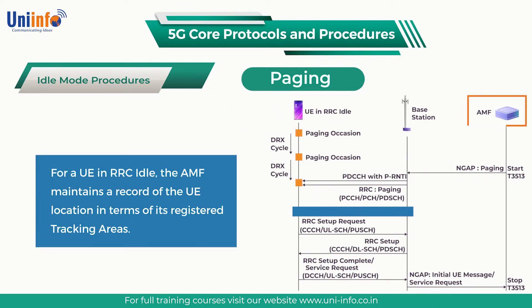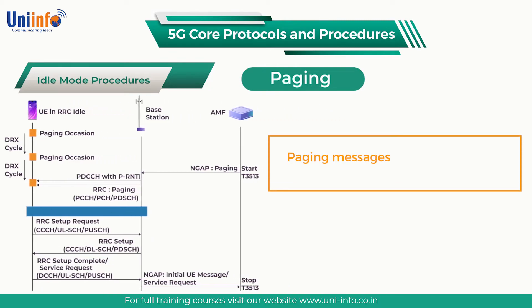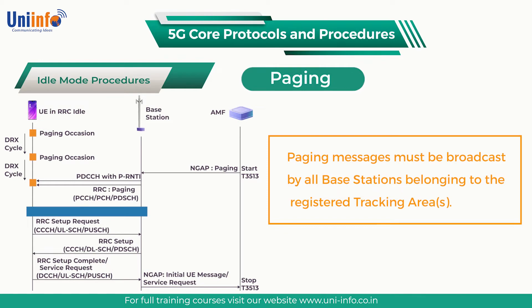For a UE in RRC idle, the AMF maintains a record of the UE location in terms of its registered tracking areas. The UE triggers a NAS registration procedure with cause value mobility registration updating if it moves outside the registered tracking areas. The UE does not update the network while moving within the registered tracking areas, meaning paging messages must be broadcast by all base stations belonging to those registered tracking areas.